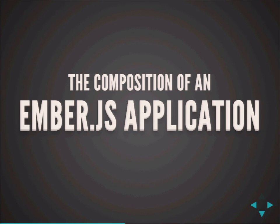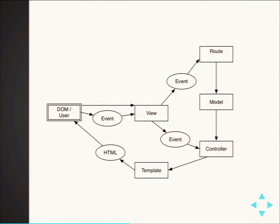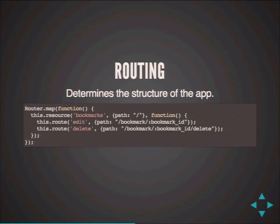I'm going to talk you through how an Ember.js application is constructed. The main entry point of everything is the routing. My example application here is a bookmark system. At the base level, the path starts with a slash, so that will be the first thing you see — the bookmarks resource, which is simply a list of bookmarks. Then there are a couple of subroutes: you can go and edit a bookmark or delete a bookmark, and both have their own URLs.